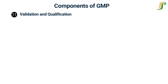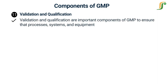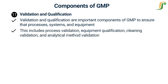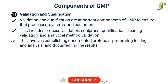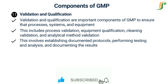The eleventh component is Validation and Qualification. Validation and qualification are important components of GMP to ensure that processes, systems, and equipment used in manufacturing are suitable for their intended purpose and consistently perform as expected. This includes process validation, equipment qualification, cleaning validation, and analytical method validation. These activities involve establishing documented protocols, performing testing and analysis, and documenting results to demonstrate the reliability and performance of the processes and systems.